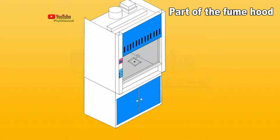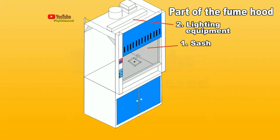Parts of the fume hood. One: Sash. A safety guard usually made of glass or acrylic. Two: Lighting equipment, positioned inside the fume hood.